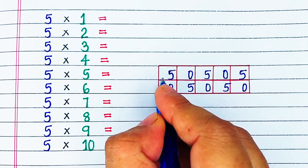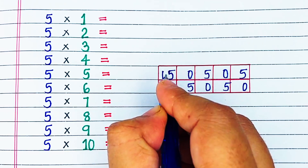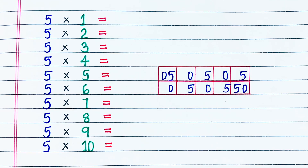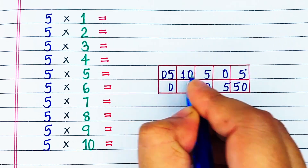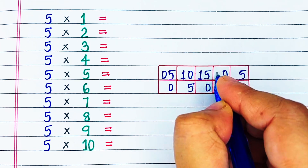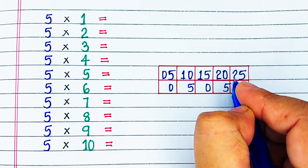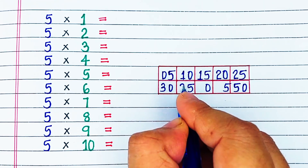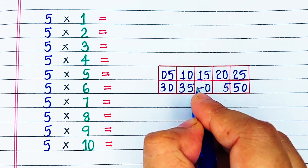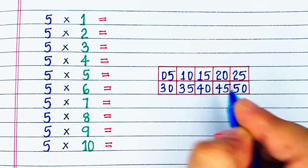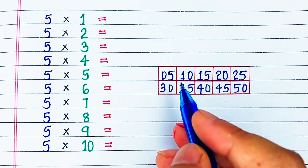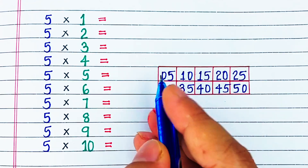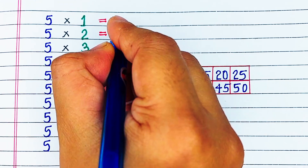Now, for the tenth digit, we will start from the first box again and we will write a very fun pattern: 0, 1, 1, 2, 2, 3, 3, 4, 4, 5. Now, we have learned an easy way to remember the 5 times table. So, let's write down the 5 table.